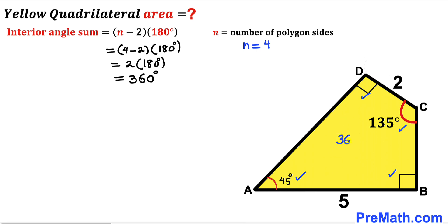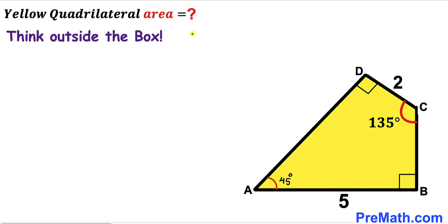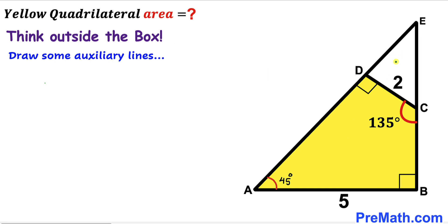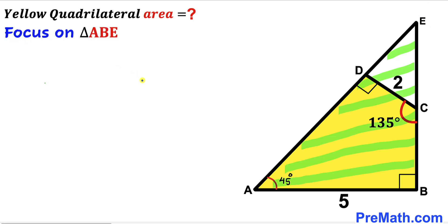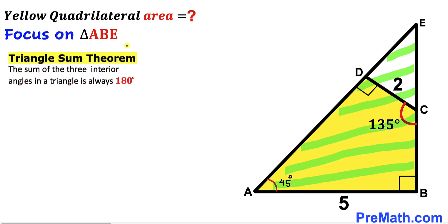Now we are going to think outside the box and draw some auxiliary lines to make our job simpler. We extend line AD and side BC until both of them meet at point E. Now let's focus on this big right triangle ABE.